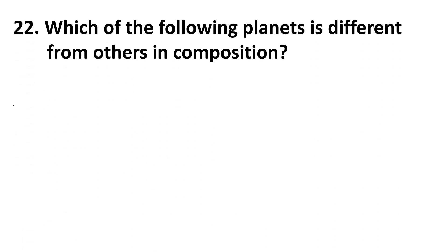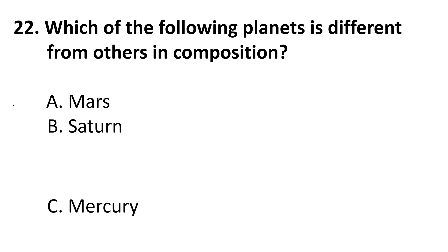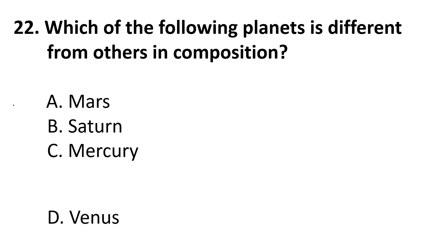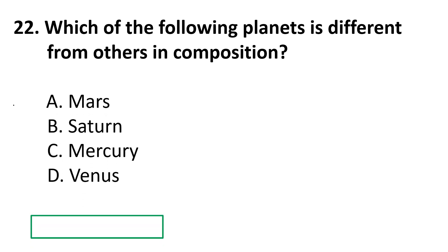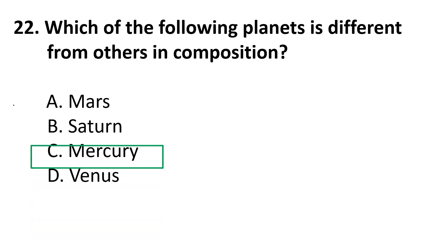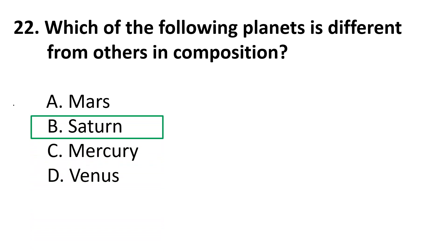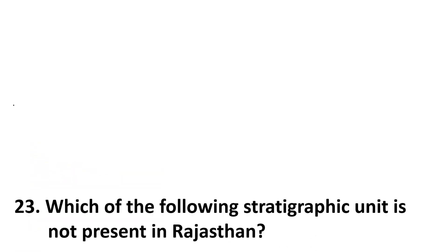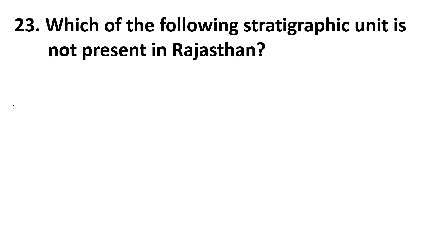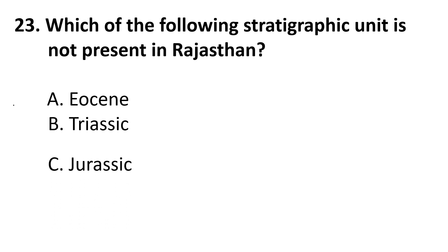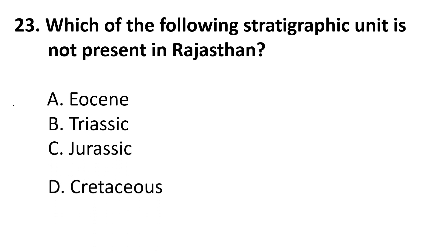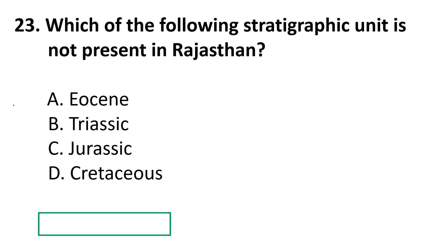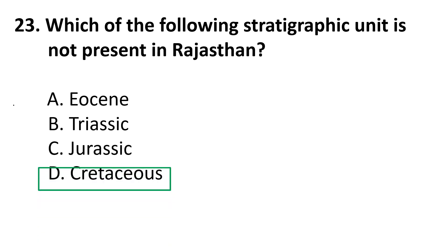Twenty-second question: Which of the following planets is different from others in composition? Choices: A) Mars, B) Saturn, C) Mercury, D) Venus. The correct answer is B, Saturn. Twenty-third question: Which of the following stratigraphic units is not present in Rajasthan? Choices: A) Eocene, B) Triassic, C) Jurassic, D) Cretaceous. The correct answer is D, Cretaceous.